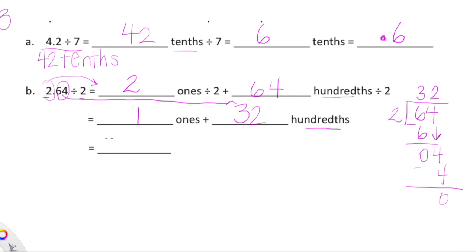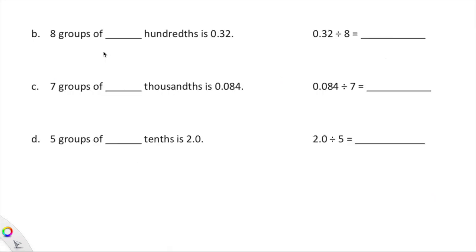So our final answer is 1 and 32 hundredths. This really is just some mathematical gymnastics — renaming the expression in unit form and then figuring out our final answer in standard form. Let's take a look at a couple more examples. We're continuing to work on division here in lesson 13, and we're going to be doing some more mathematical gymnastics. I want you guys to really think about what's going on.